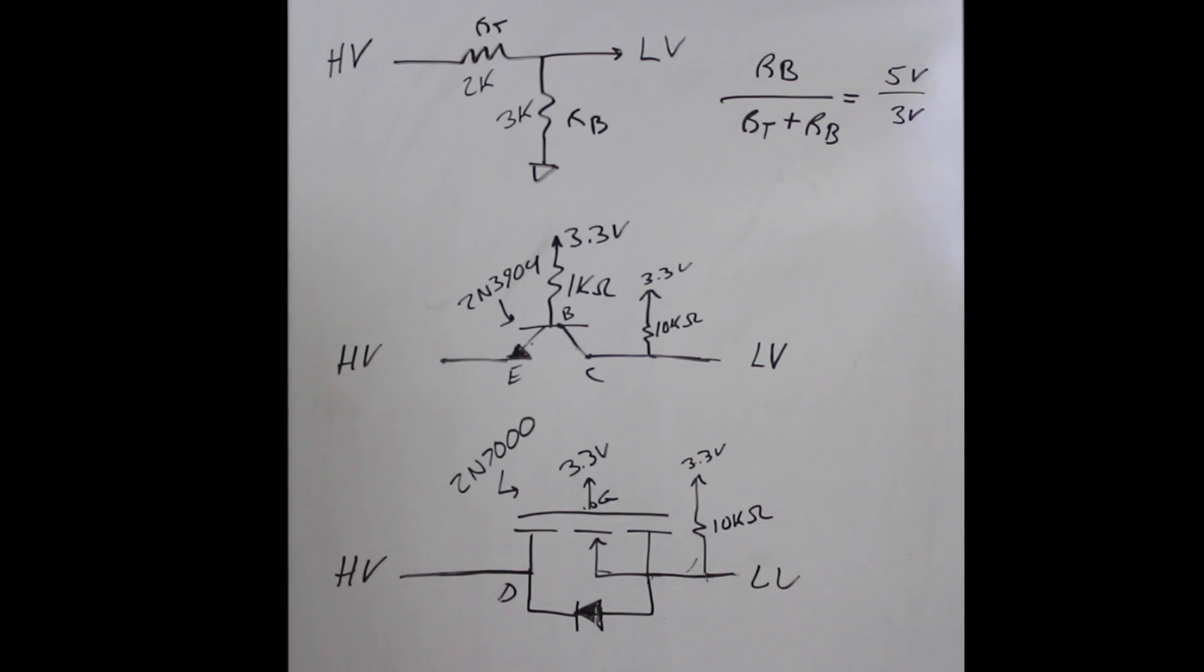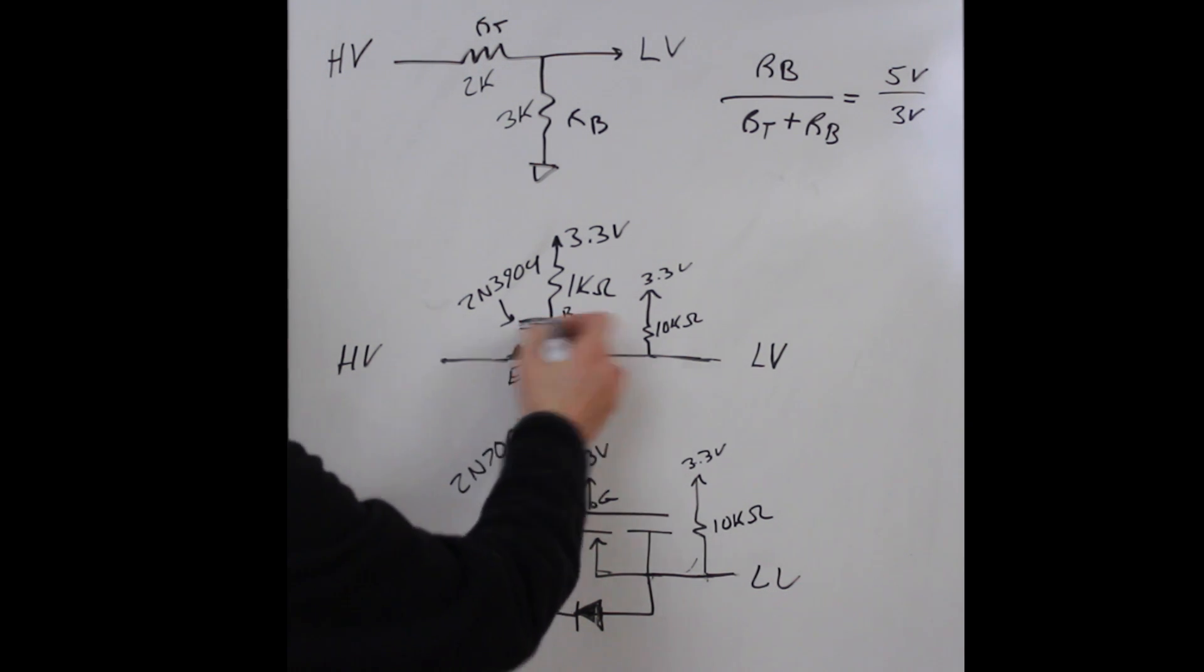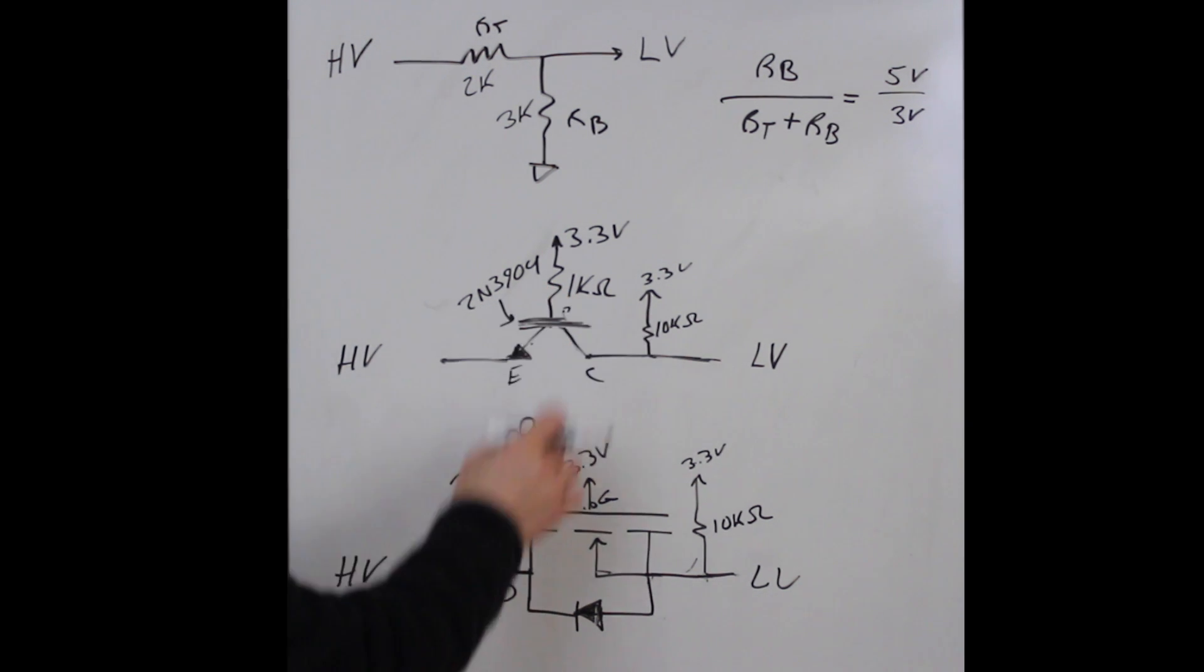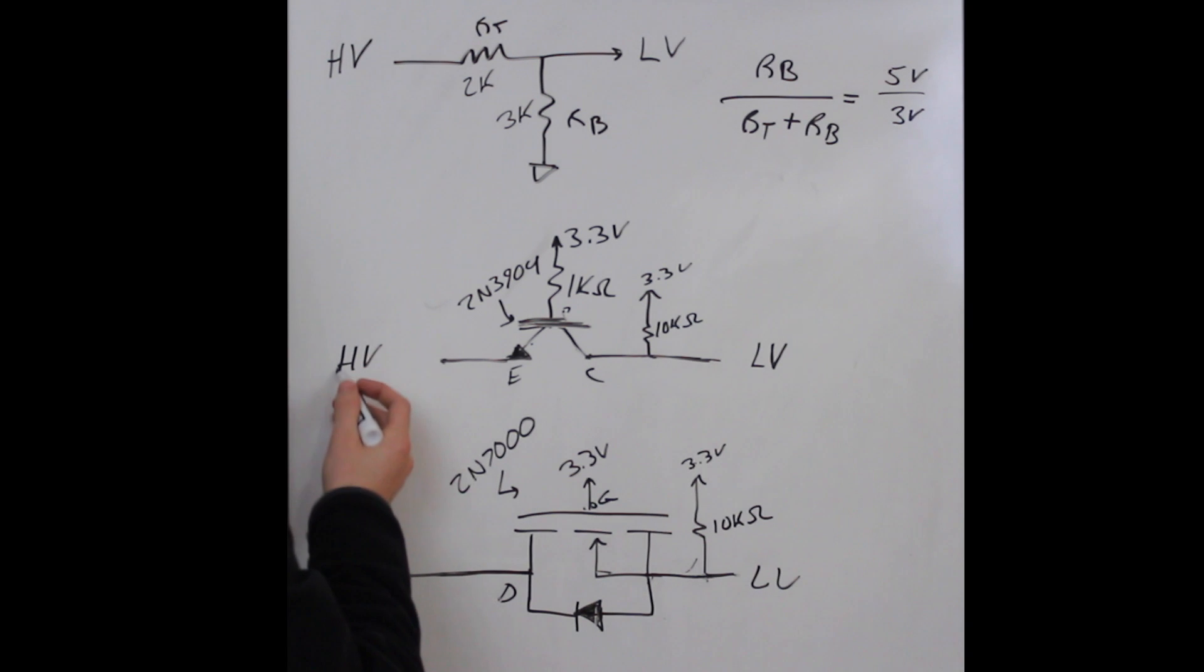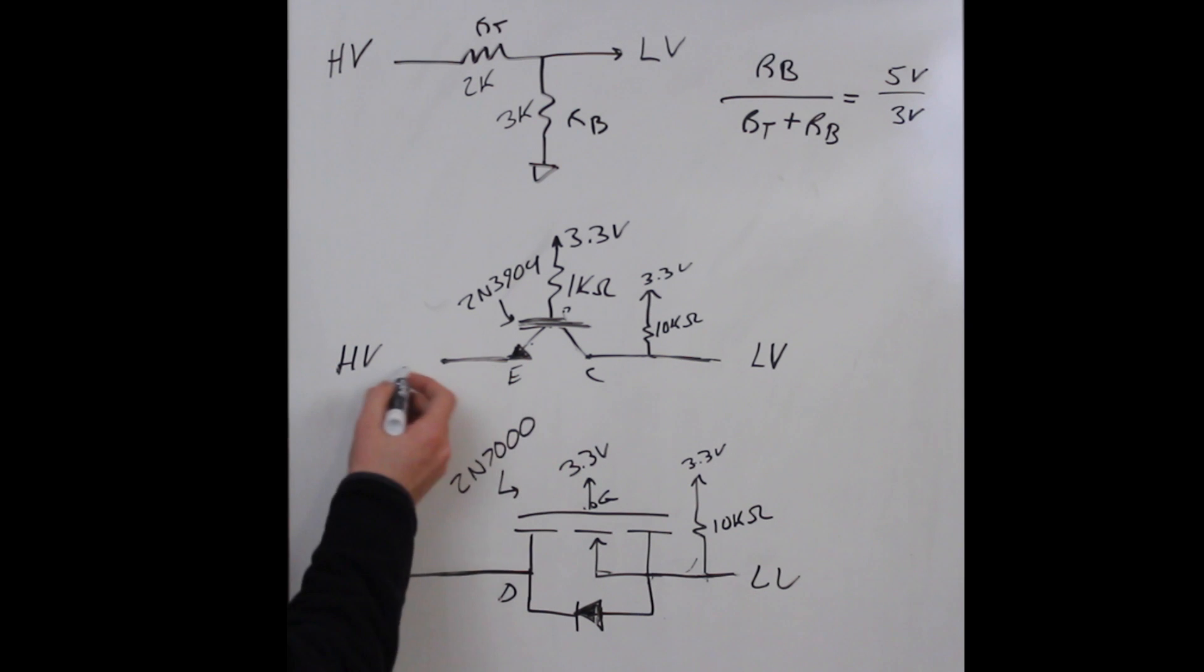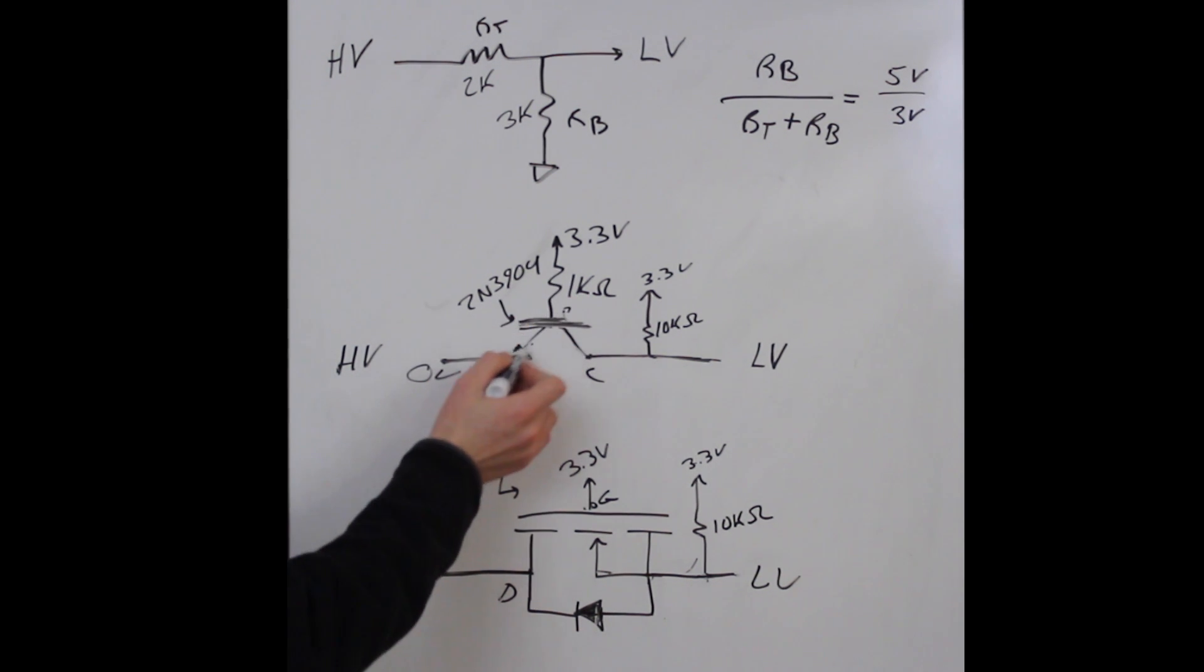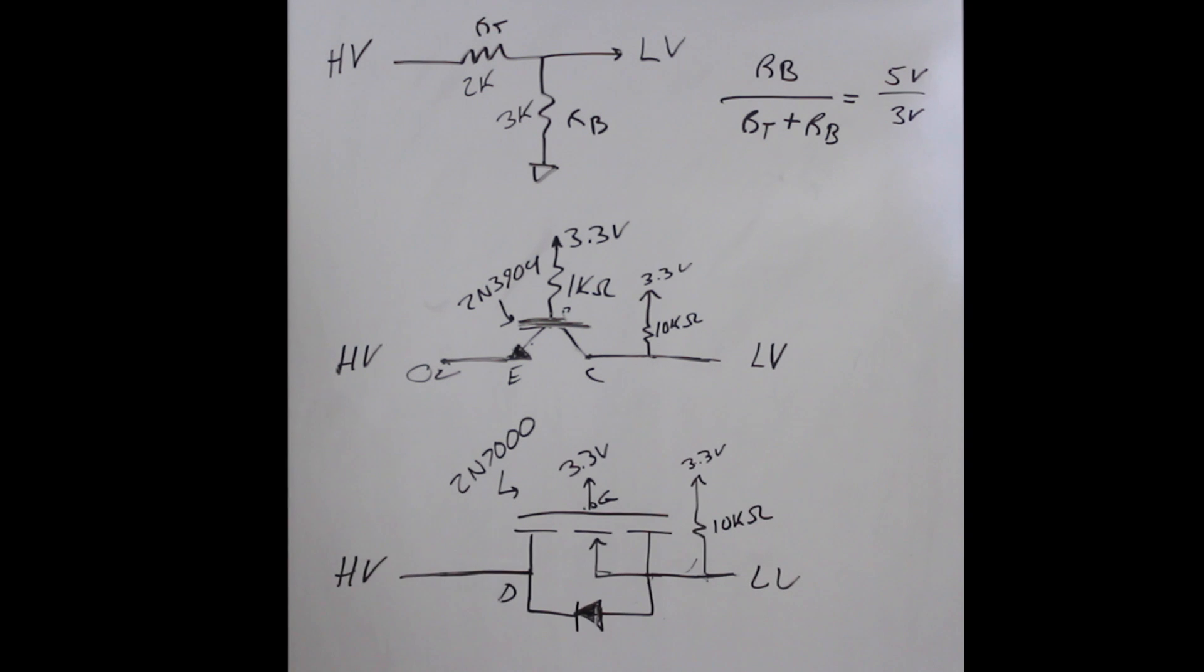With a logic high, 5 volts here, our VBE is reverse biased. The transistor would be off, so high here and your low voltage side would be pulled up to 3.3. As soon as you make this 0 volts, you forward bias VBE, the transistor conducts, and you pull this point down low.